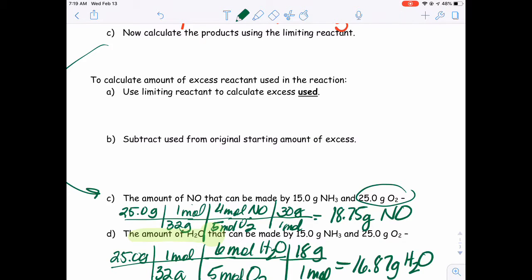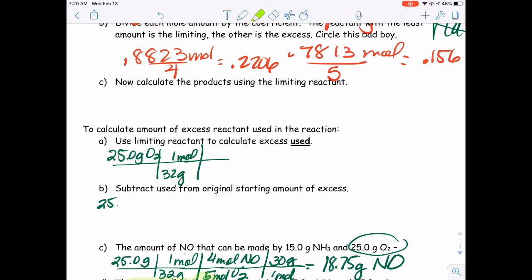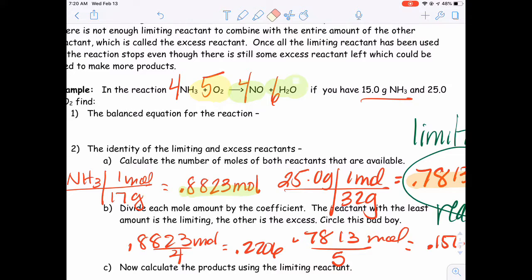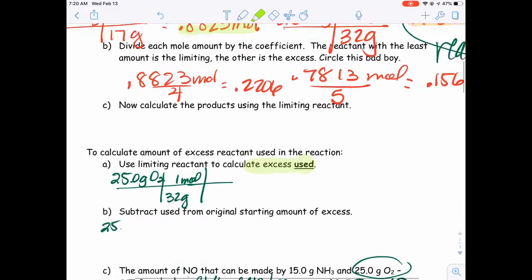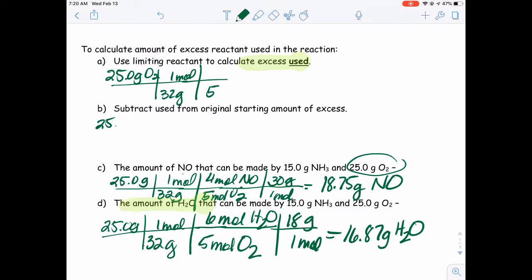So, once again, we're going to start using our oxygen, 25 grams of oxygen divided by the molar mass of oxygen. Alright. But this time, we're calculating how much we're actually going to use, the excess. And we said that the excess was ammonia. So we're going to look at our ratio of oxygen to ammonia. We have 5 oxygens. For every 4 moles of ammonia, we use 5 moles of oxygen. Then we multiply by the molar mass.